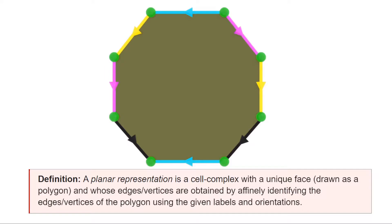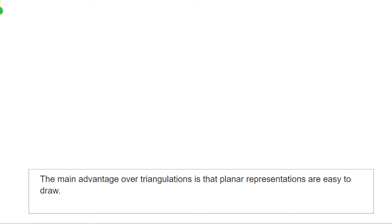In the example, we see an octagon with eight sides, and these are identified in a pairwise manner using four colors — so the resulting surface has four edges. We will also see that all the vertices are identified with one another, which is why they are all colored in green. This follows from the colors of the edges. The reason we work with planar representations is because they are planar, meaning we can draw and manipulate them easily.